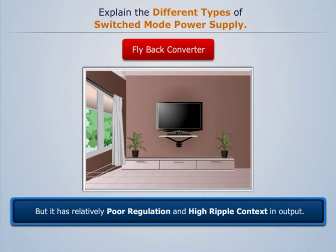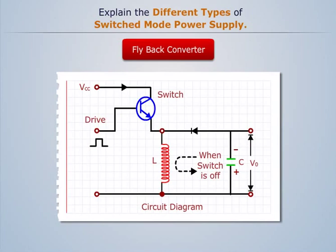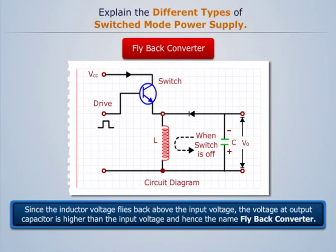The circuit diagram of flyback converter is given as the energy stored in the inductor during the on period of the switch. This energy is discharged into output when the switch is in open state. Since the inductor voltage flies back above the input voltage, the voltage at output capacitor is higher than the input voltage, and hence the name flyback converter.